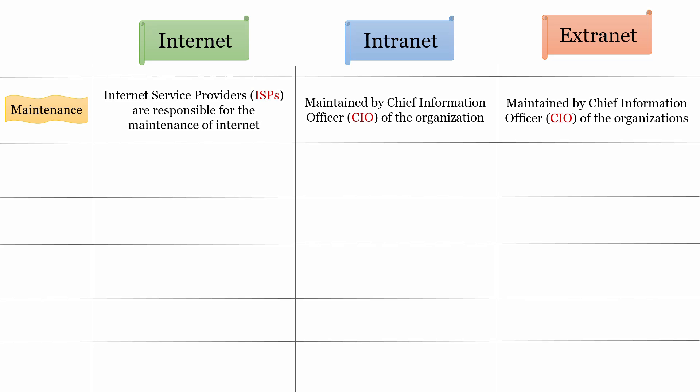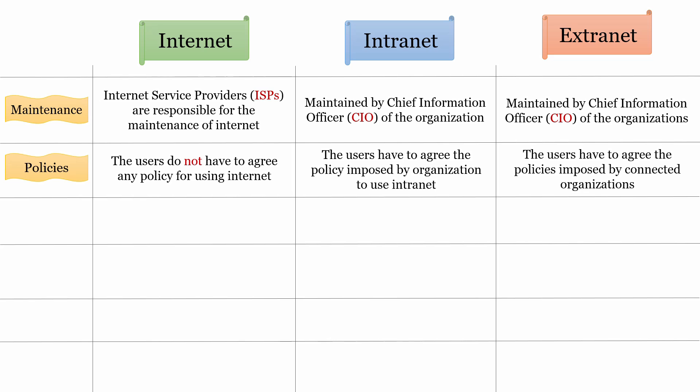If we talk about maintenance: internet service providers who build and control specific networks are responsible for the maintenance of internet. As intranet is a private network, it is maintained by the chief information officer, i.e. CIO, of the organization. As extranet is a private and shared network, it is also maintained by the chief information officer of the organization. If we talk about policies: users do not have to agree to any policy for using internet. While using intranet, the user has to agree to policies imposed by the organization. While using extranet, the user has to agree to policies imposed by connected organizations.